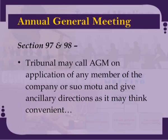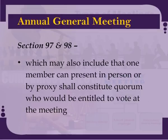Section 97 and section 98 of the Companies Act state that in case of default in holding AGM, the tribunal may call an AGM on the application of any member of the company or suo moto, and give ancillary directions as it may think convenient, which may also include that one member present in person or by proxy shall constitute the quorum who would be entitled to vote at the meeting.